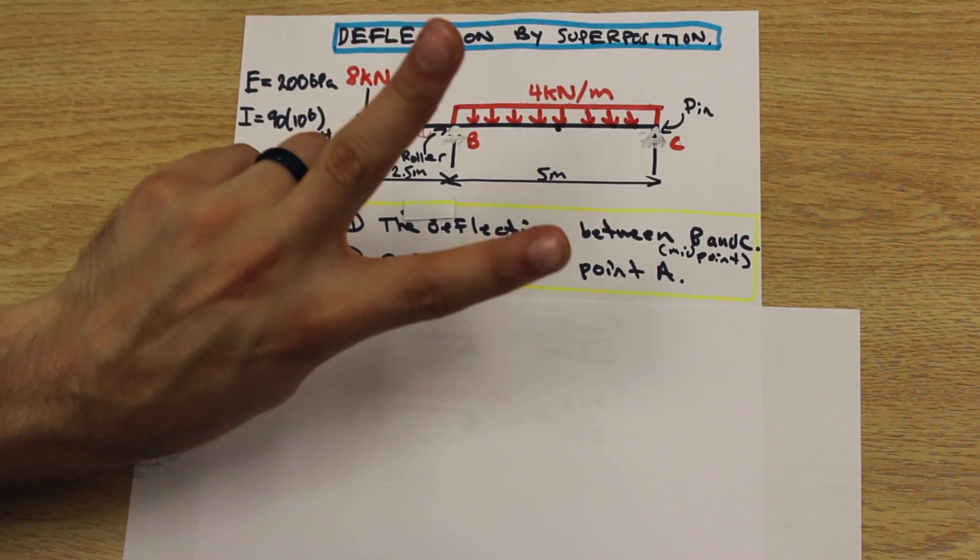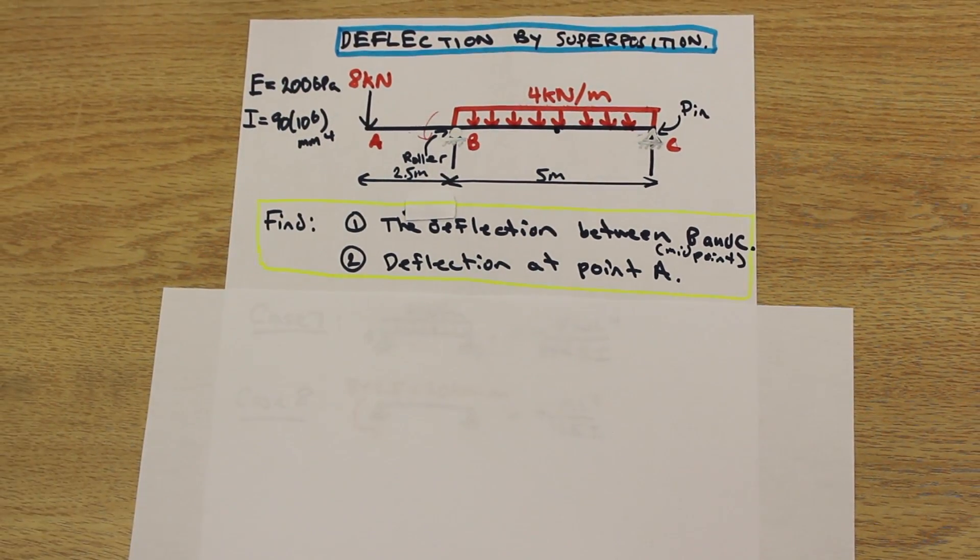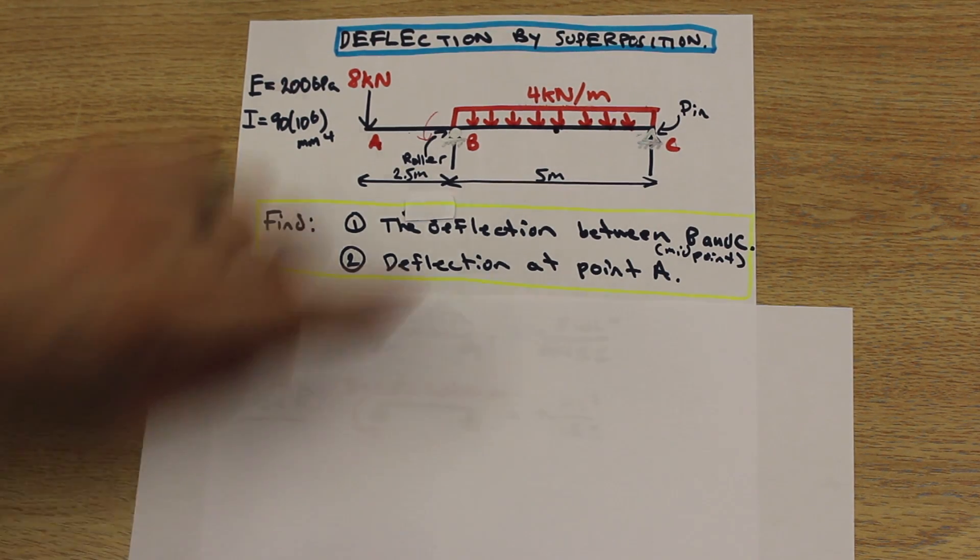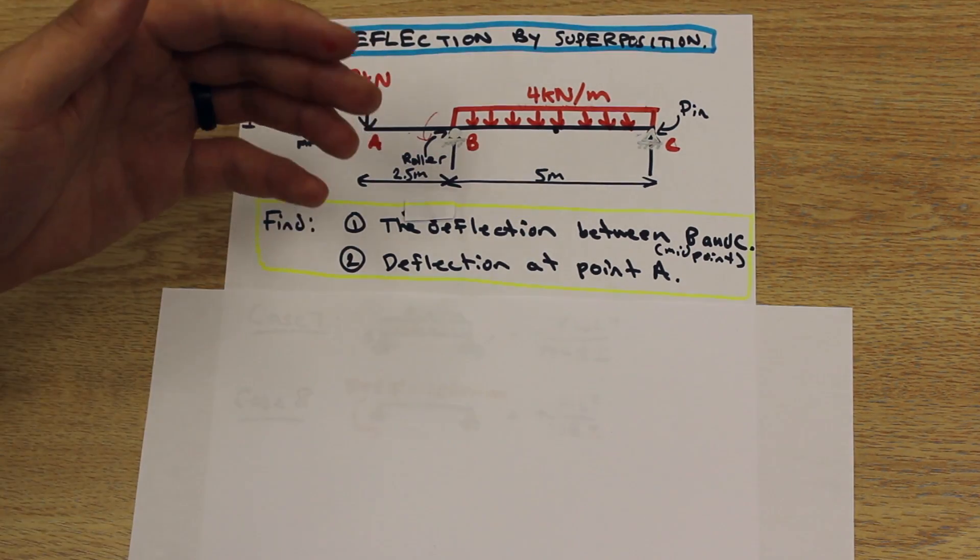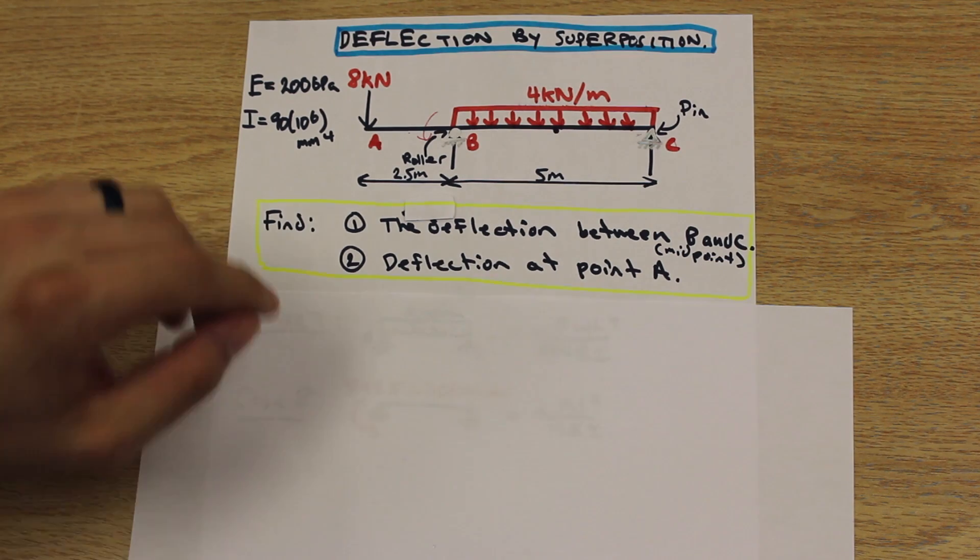Whenever we're solving a superposition problem, we want to break up the beam into its external loadings. So don't worry about the reactions in superposition. We don't need to find those. But we do need to identify what is being loaded onto the beam.